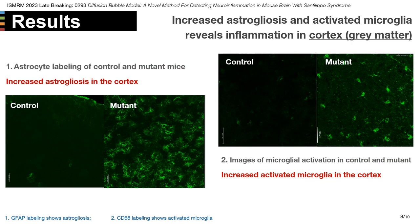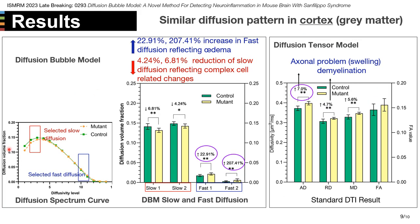Similar patterns were found in the cortex in the gray matter: increased astrogliosis, increased activated microglia, and inflammation happening there. Different curves and reduction in slow diffusivity, increase in the fast diffusion component. Also, the changes from our new model are much larger than changes from DTI.